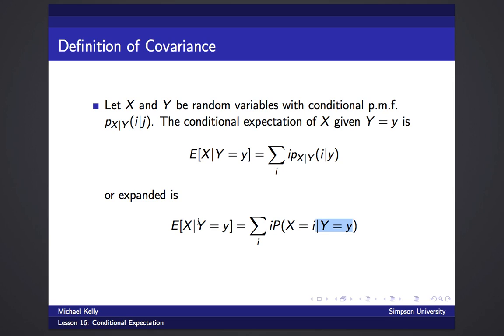But once we know something about y that will change the average value of x. So if we now have the information that y equals this little y, we have to change the probabilities that x takes on the values i.